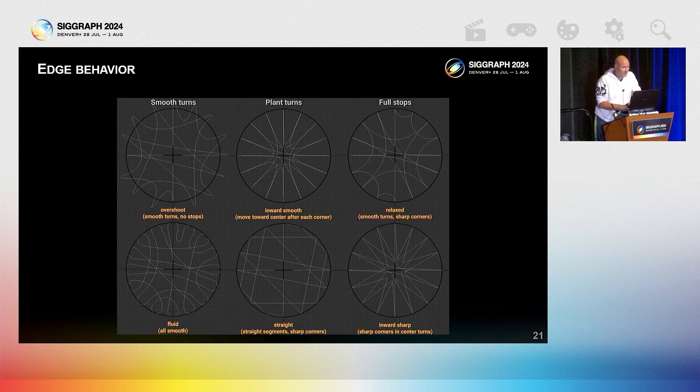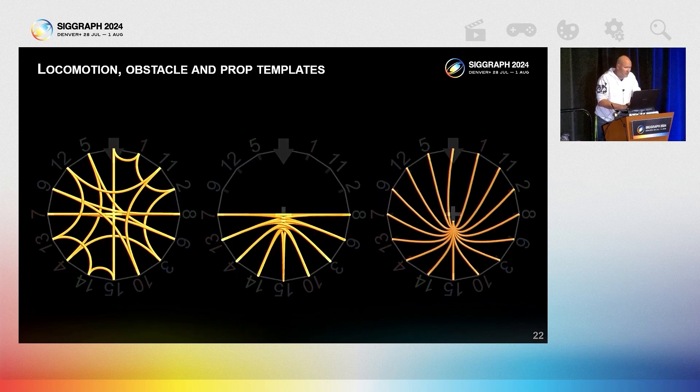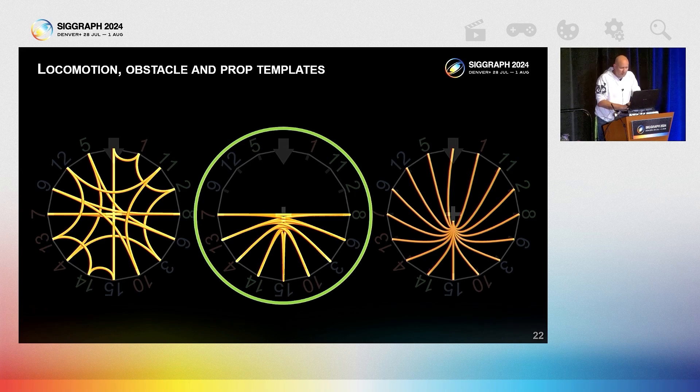In a loop, actor can move in straight lines or curves and do different things at edges. For walls, we fold loop on itself. For props, we put the prop in the middle and we capture 16 ways in and 16 ways out of any prop per prop in two minutes.